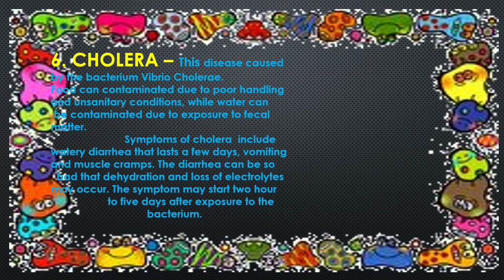Number six is Cholera. This disease is caused by the bacterium Vibrio cholerae. Food can be contaminated due to poor handling and unsanitary conditions, while water can be contaminated due to exposure to fecal matter. Symptoms of cholera include watery diarrhea that lasts a few days, vomiting, and muscle cramps. The diarrhea can be so severe that dehydration and loss of electrolytes may occur. Symptoms may start two hours to five days after exposure to the bacterium.